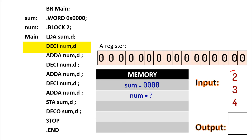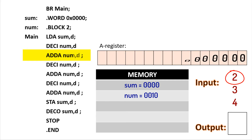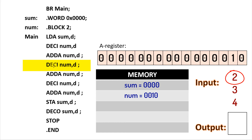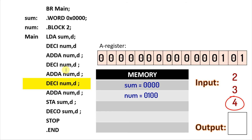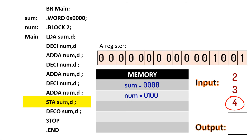The next instruction takes an input from the user and stores it into num. The following instruction adds to the accumulator the value in num using direct memory addressing, so we add whatever is contained in num to the A register. We then input another decimal value and store it in num, overwriting the existing value. We add num to the accumulator again. The following instruction gets another value from the user and overwrites num. Then we add num to the accumulator, store whatever is in the accumulator into sum, and finally output sum to the user.